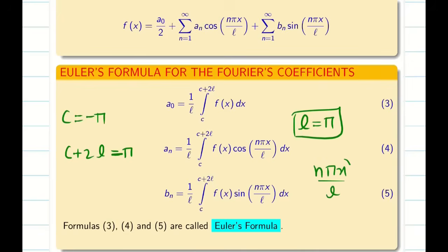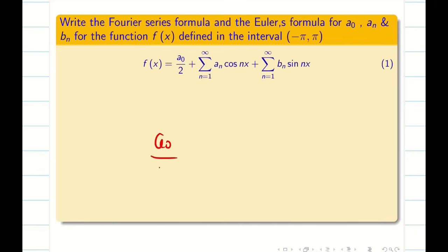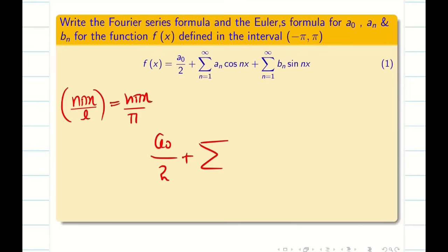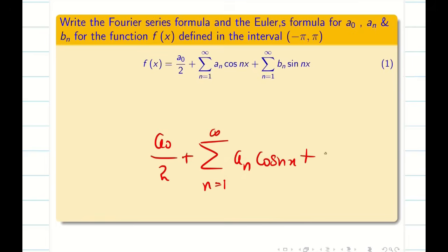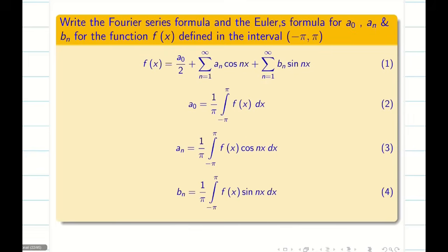With l replaced by pi, the term n pi x by l becomes n pi x by pi, and pi cancels, giving simply n x. So at the interval minus pi to pi, the Fourier series becomes a naught by 2 plus summation of a n cos(nx) plus summation of b n sin(nx). The coefficients a n and b n use cos(nx) and sin(nx) respectively.